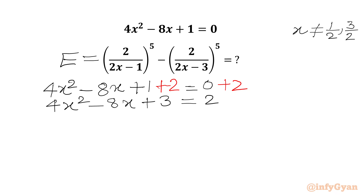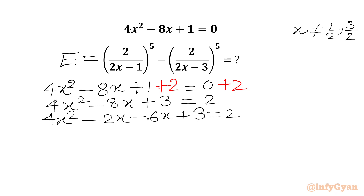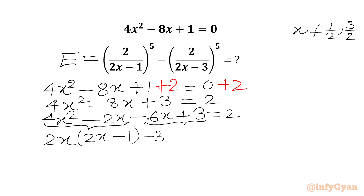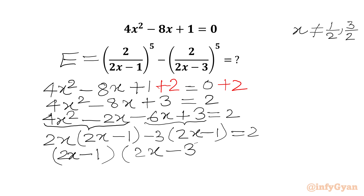Now 4 times 3 is 12 and 6 plus 2 is 8, so we can think about factorization of the LHS. We write 4x² - 8x as -2x - 6x, then plus 3, RHS is 2. Taking 2x common from the first two terms gives 2x(2x - 1), and taking -3 common from the last two terms gives -3(2x - 1) = 2. So we get (2x - 1)(2x - 3) = 2.